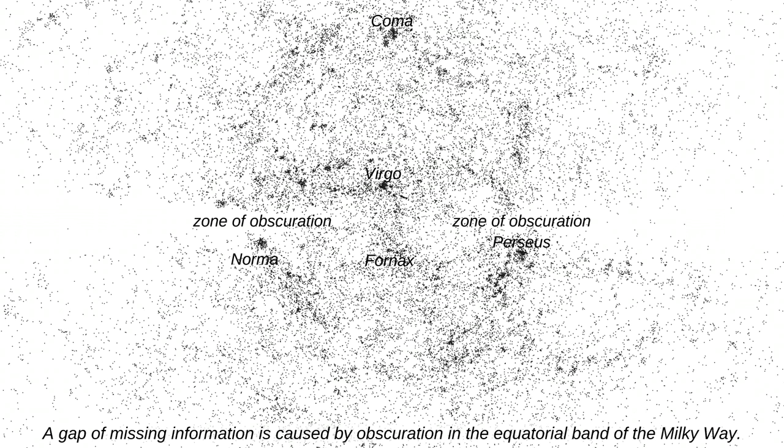A gap of missing information is caused by obscuration in the equatorial band of the Milky Way.